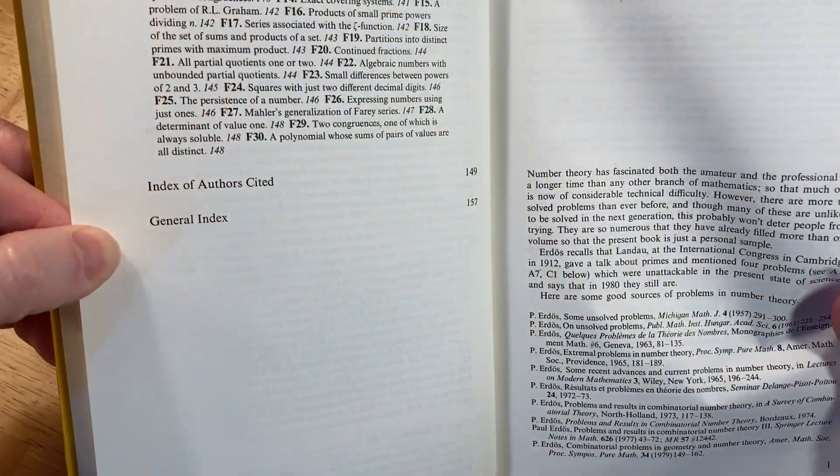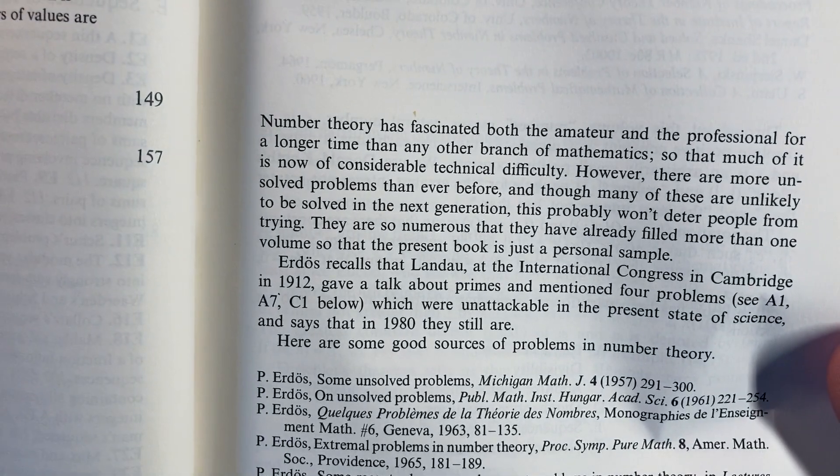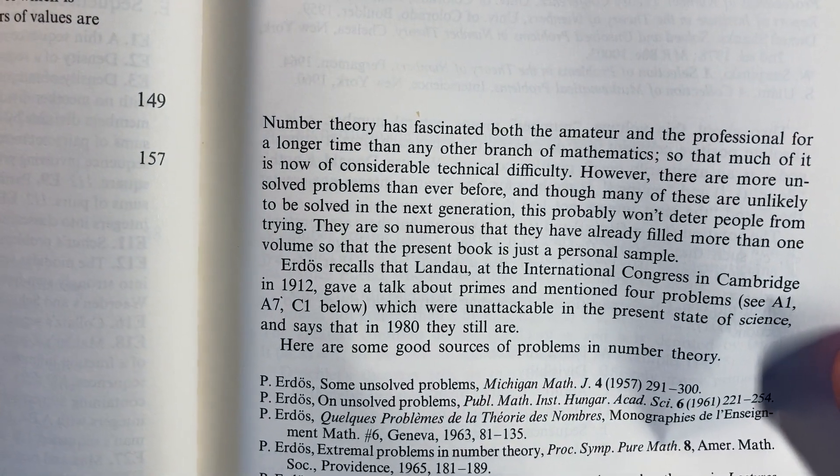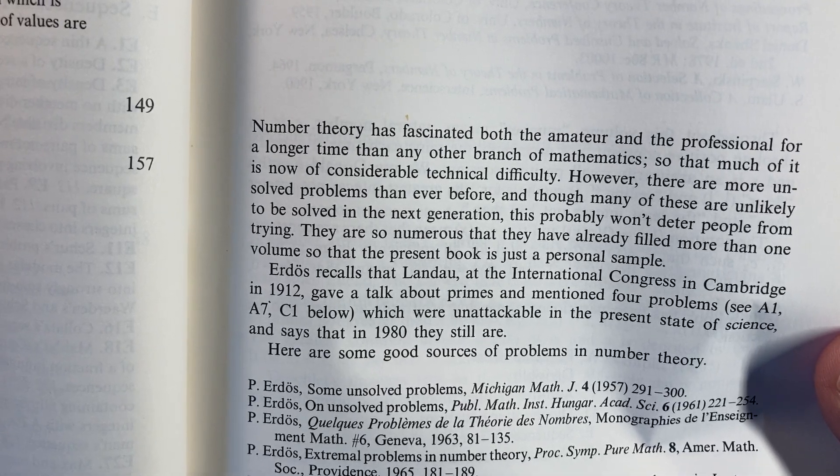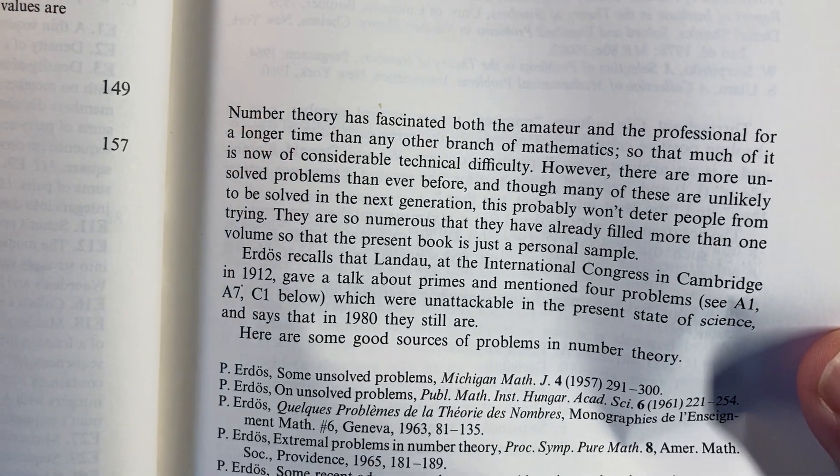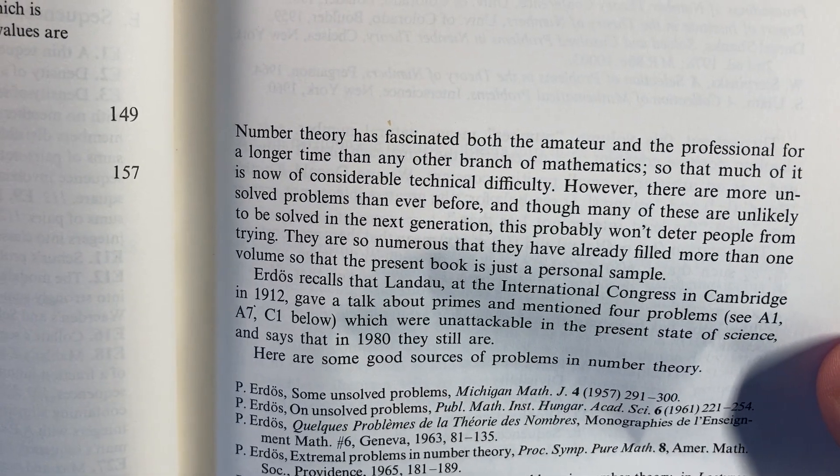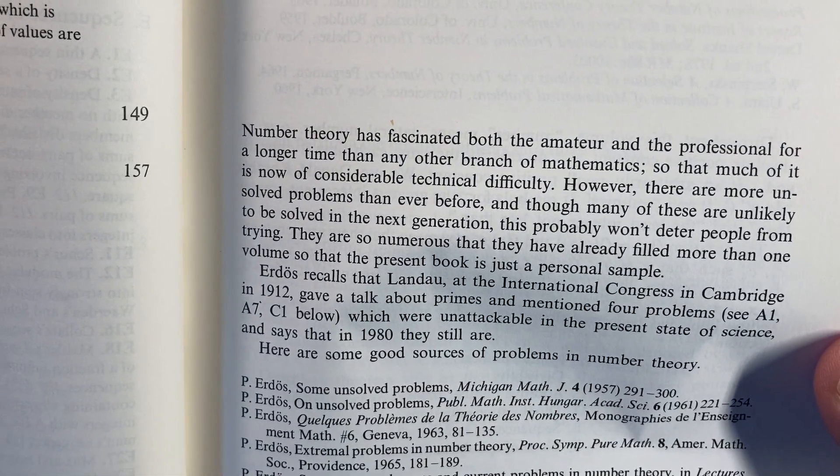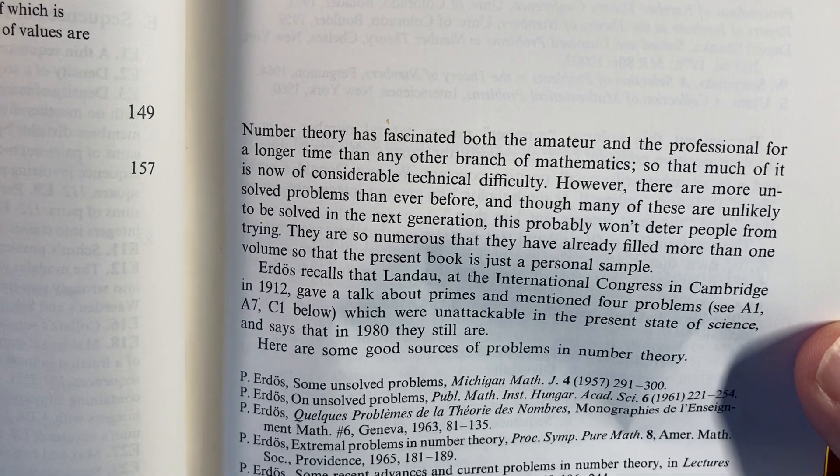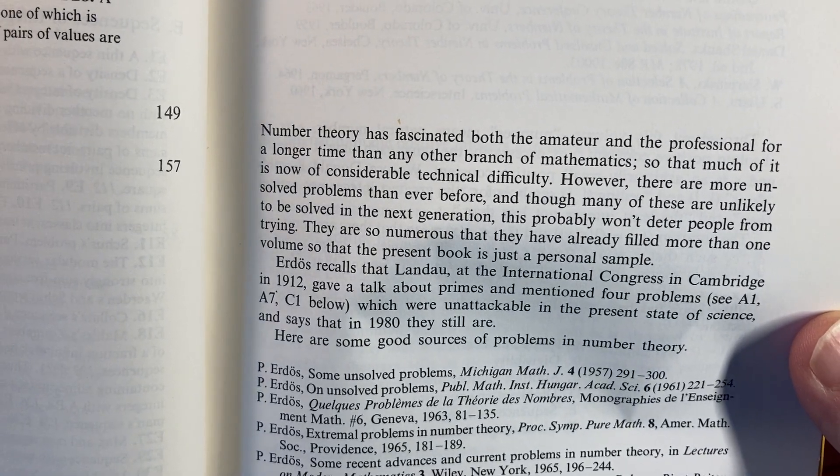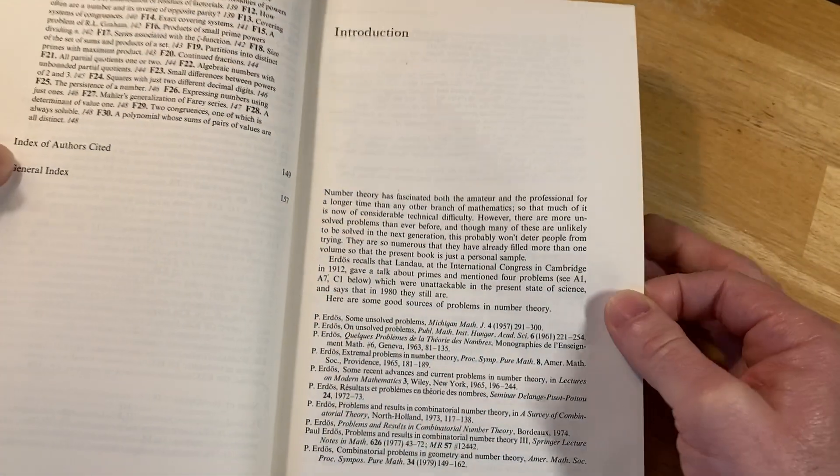This is hard math. Number theory has fascinated both the amateur and the professional for a longer time than any other branch of mathematics, so that much of it is now of considerable technical difficulty. However, there are more unsolved problems than ever before, and though many of these are unlikely to be solved in the next generation, this probably won't deter people from trying. They are so numerous, they have already filled more than one volume, so that the present book is just a personal sample.